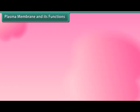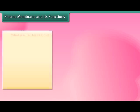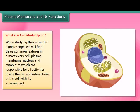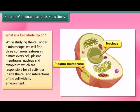What is a cell made up of? While studying the cell under a microscope, we find three common features in almost every cell: the plasma membrane, the nucleus, and the cytoplasm. These three components are responsible for all activities inside the cell and interactions of the cell with its environment.